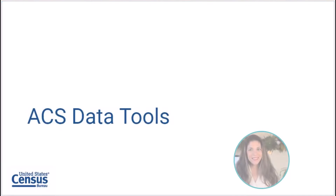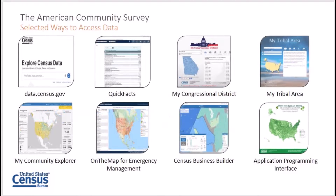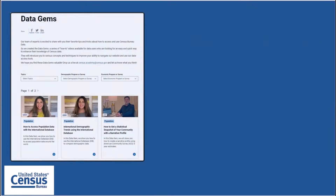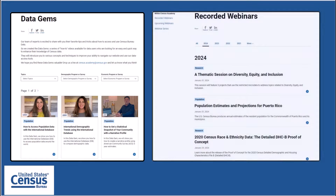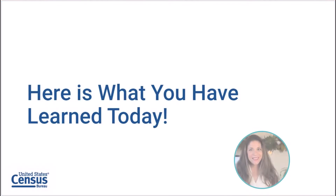In this final section, we will review some Census Bureau tools that you can use to access ACS data. Catering to a variety of data users with unique needs, we have a variety of data access tools. You can learn more about these tools to figure out which one fits your needs best by going to the link provided below the video. There are several data gems, which are short how-to videos or webinars on using most of these tools, on the Census Academy page.